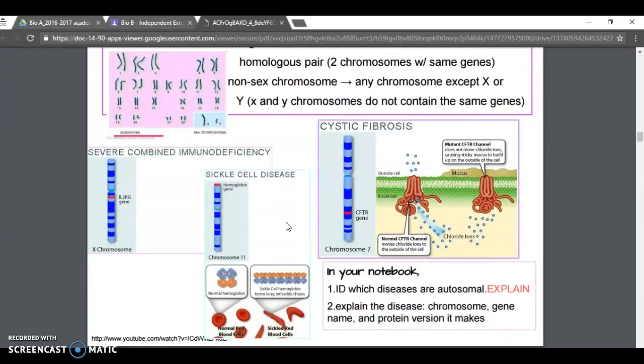Any chromosome that is not X chromosome or Y chromosome is called autosomal. So scientists or doctors, anytime you inherit a disease that's not linked to a sex chromosome like X or Y, it is called an autosomal disease. Here in the to-do in your notebook, you have to figure out which of these three diseases is autosomal.